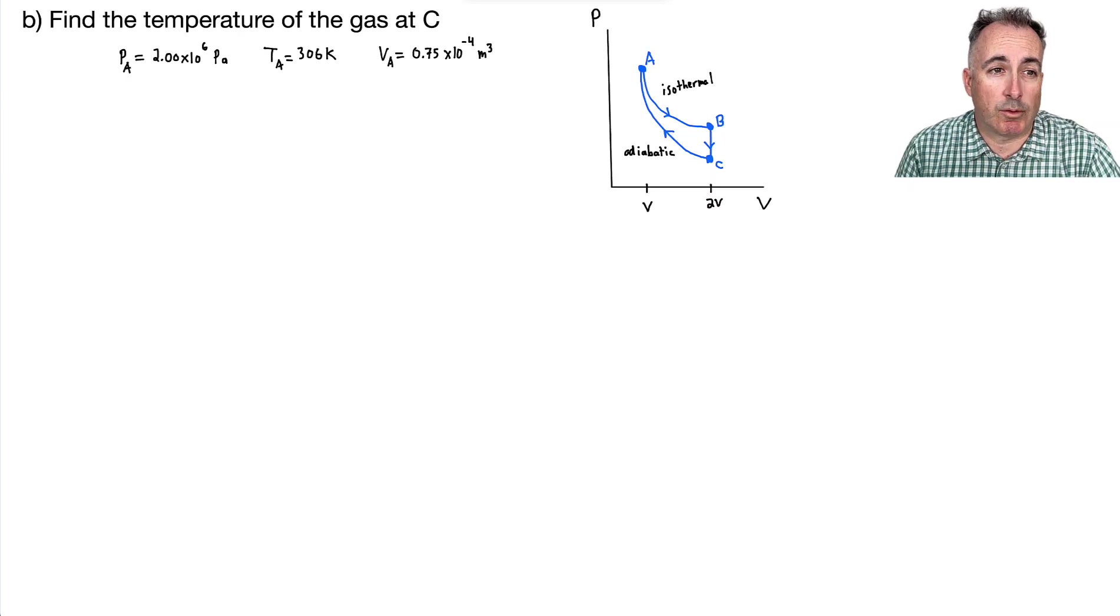Let's take a look at part B. So now we're supposed to find the temperature of the gas at C. So at this point right here. So remember, over here, we start off at A, and we had an isothermal expansion right here to B. Then from B to C, we had an isovolumetric change. And after that, it was an adiabatic compression to get back. And the question is, what is the temperature here? I just rewrote a few of the facts that we knew here.